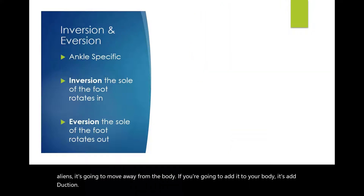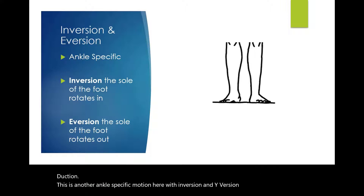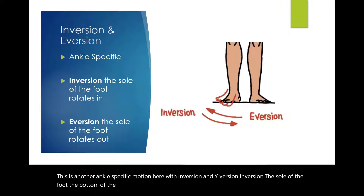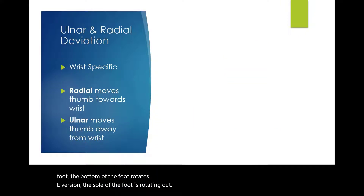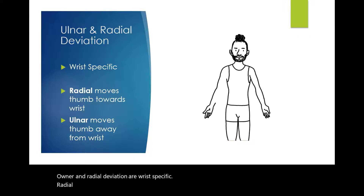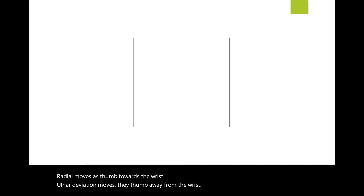Inversion and eversion are ankle-specific motions. With inversion, the sole of the foot rotates in; with eversion, the sole of the foot rotates out. Ulnar and radial deviation are wrist-specific motions. Radial deviation moves the thumb towards the wrist; ulnar deviation moves the thumb away from the wrist.